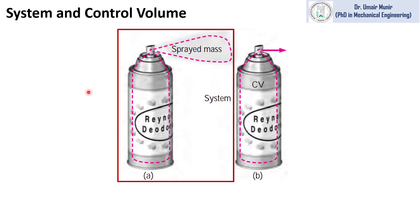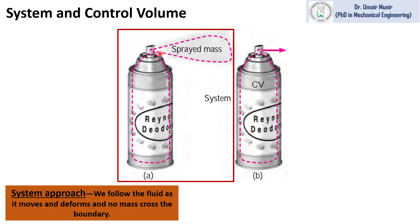Before the derivation of Reynolds Transport Theorem we must understand the difference between a system and control volume. In the system approach we follow the fluid as it moves and deforms. You can see the boundaries of a system by these dashed lines, and the boundaries are changing as the fluid is sprayed from the bottle. But as it is a closed system, no mass can cross the boundary. The system approach is much more difficult to analyze fluid flow problems.